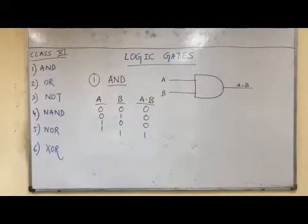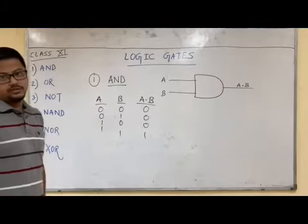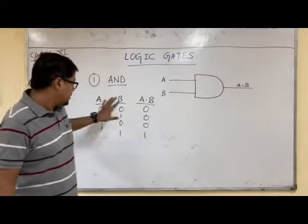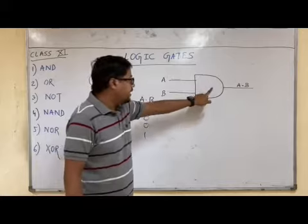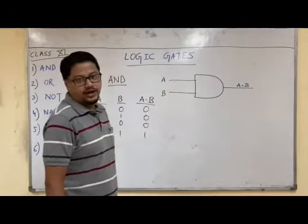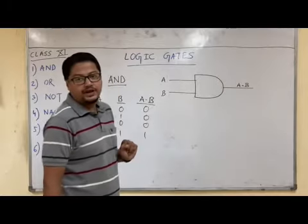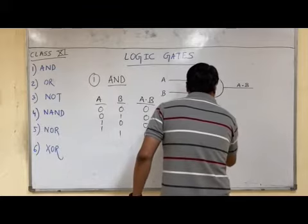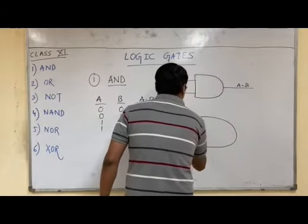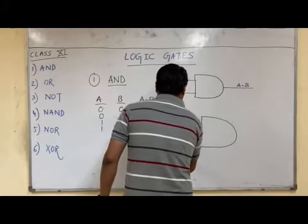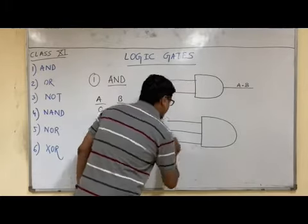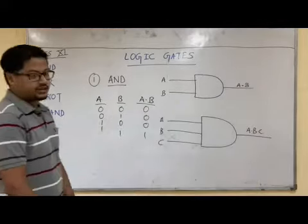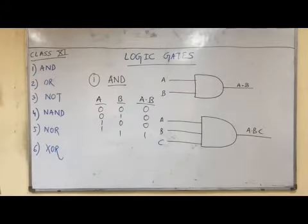This is our AND logic gate circuit diagram for two variables. These are the inputs — A and B going in. The processing is done in the logic gate and the output is A dot B. This is the shape of the AND logic gate. If you want to draw the AND logic gate for three or more variables, the inputs are A, B, C and the output will be A dot B dot C.